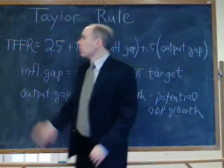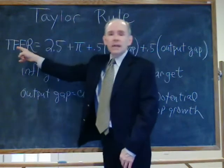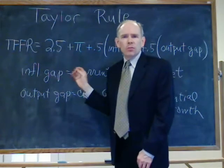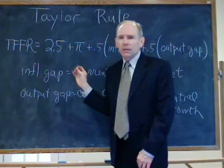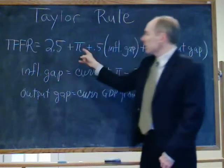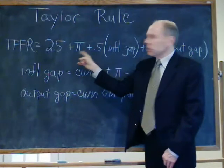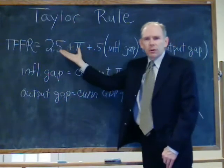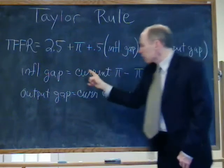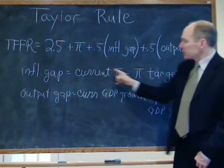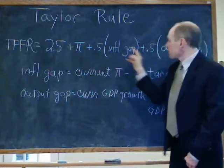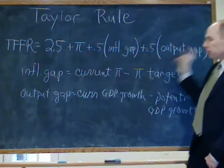Here's the Taylor Rule. The Taylor Rule says the target Fed Fund's rate equals 2.5 — that's a constant. We always assume there's some real rate of return in society regardless of inflation or the level of GDP growth in the economy. Plus pi, that's inflation — think of that as maybe 2, which gets you about 4.5. Plus 0.5 times what's called the inflation gap. The inflation gap is current inflation minus inflation target. If that's 2 and the target is 2, you get 0 there.